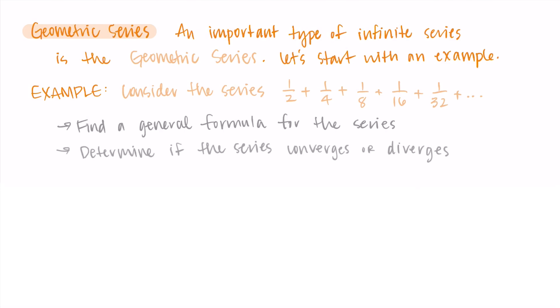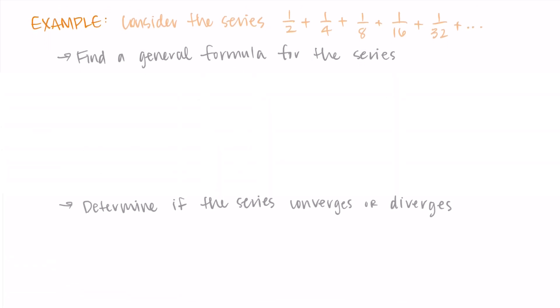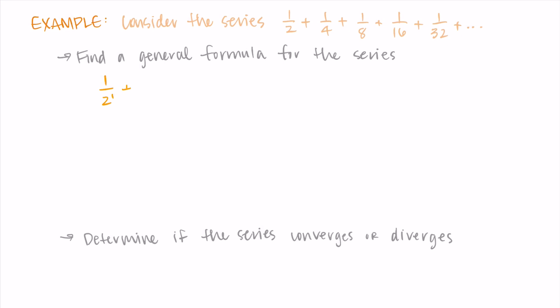Let's start by finding a general formula. I'm noticing that the numerators stay the same, they're always one, and the denominators are powers of two. So I have 2, 4 is 2², 8 is 2³, 16 is 2⁴, and 32 is 2⁵.